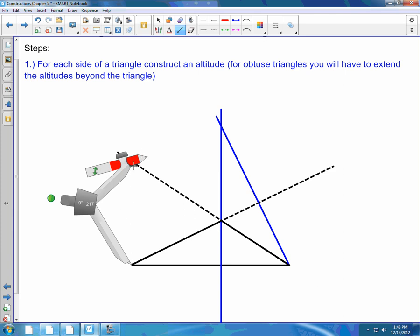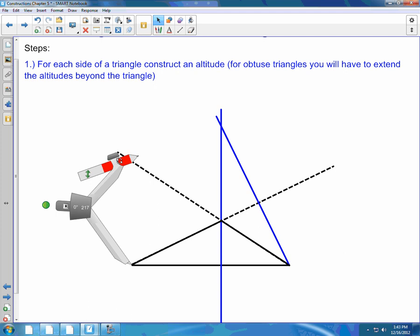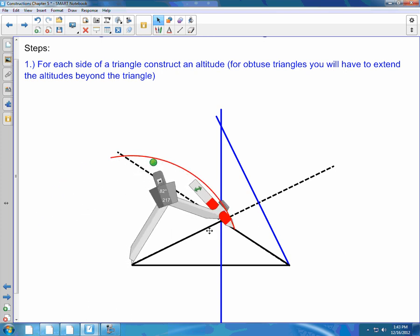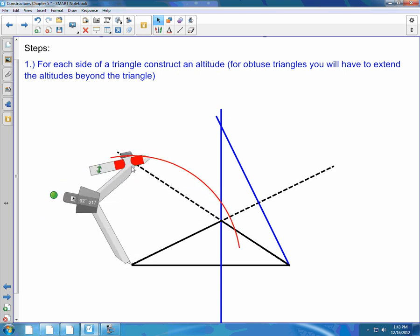All right. Now, it looks like I can draw an arc that crosses that side twice.